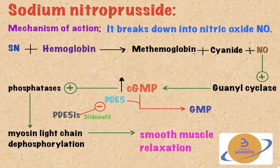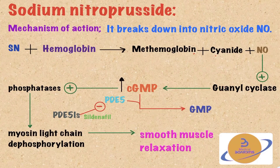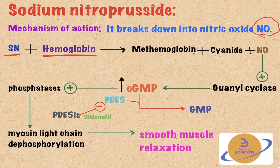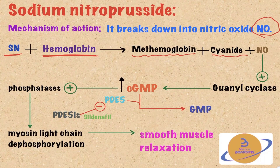The mechanism of action of sodium nitroprusside is similar to that of nitroglycerine. Sodium nitroprusside is a prodrug that becomes converted inside the body into nitric oxide. What happens is, sodium nitroprusside combines with hemoglobin and forms methemoglobin, and then it cleaves cyanide and nitric oxide.